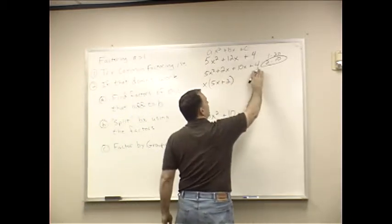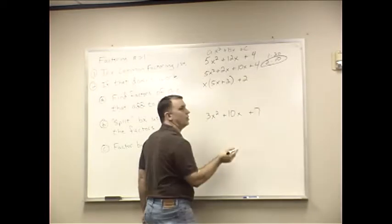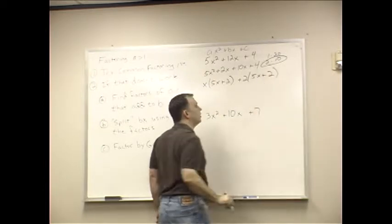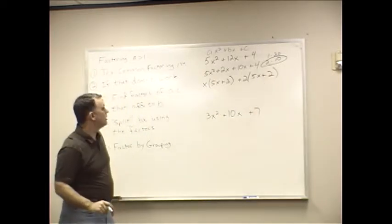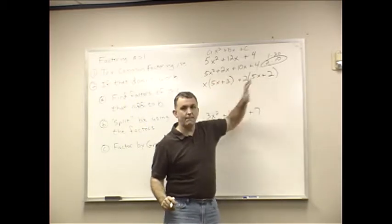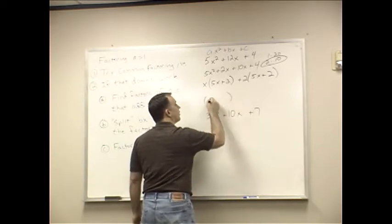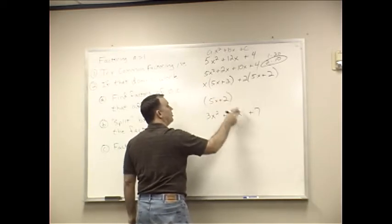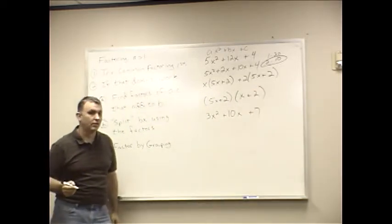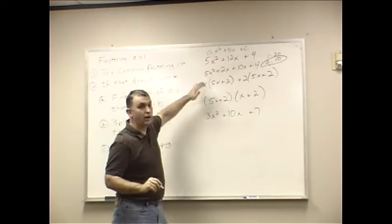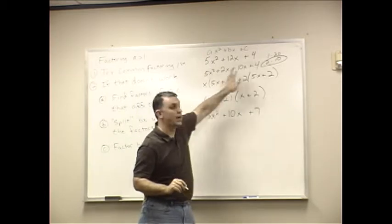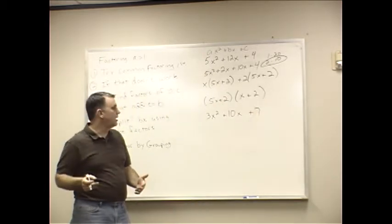And then 10X and 4, what do they have in common? Well, they have a 2 in common. And then I get 5X plus 2. So, right here now, these both have a 5X plus 2 in common. So, I write 5X plus 2. And these leftovers, X plus 2, go in the parentheses. So, if you were good at factoring by grouping before, it's just the same thing once you get it to this point. It just takes a little bit of work to get it there.